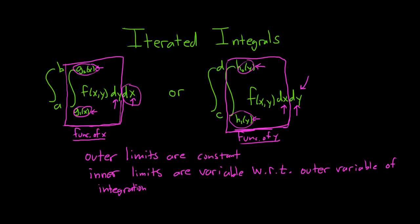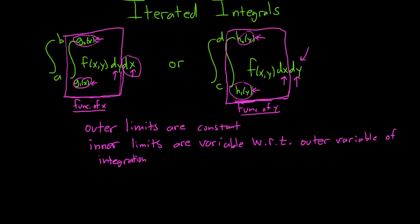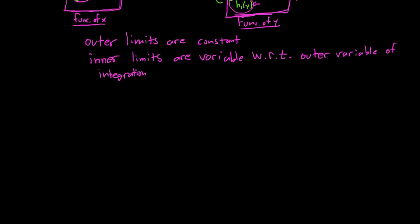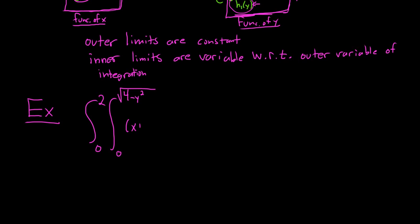Let's go ahead and do a simple example of evaluating one of these iterated integrals. We're going from 0 to 2 on the outside, and from 0 to the square root of 4 minus y squared on the inside. The integrand is x plus y, dx dy. So first we integrate with respect to x, then with respect to y.